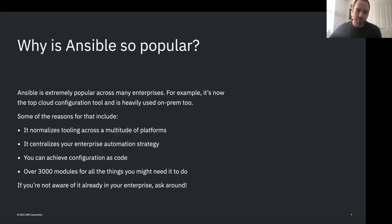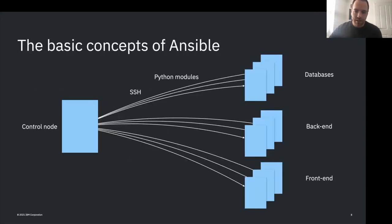Ansible has a unique architecture - you don't actually install Ansible on the machine you're trying to automate. They refer to that as agentless, though it doesn't quite mean you don't have to install anything. Essentially the way Ansible works is you run it from what's called a control node - in my demos that's going to be my laptop. It establishes connections to remote machines over SSH.